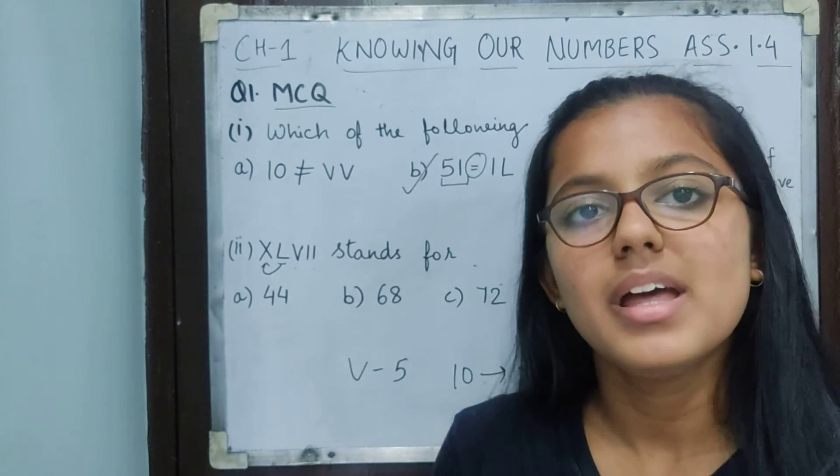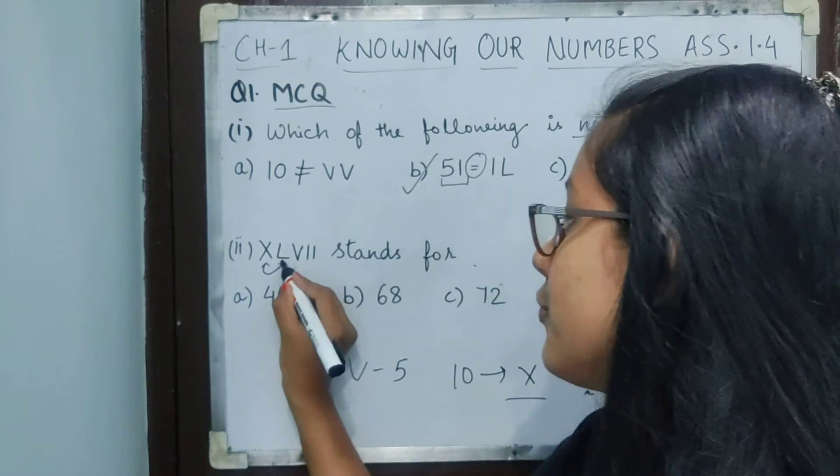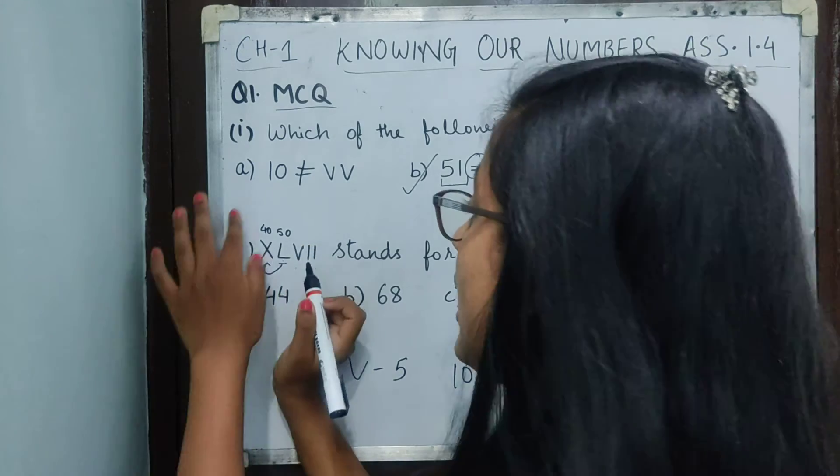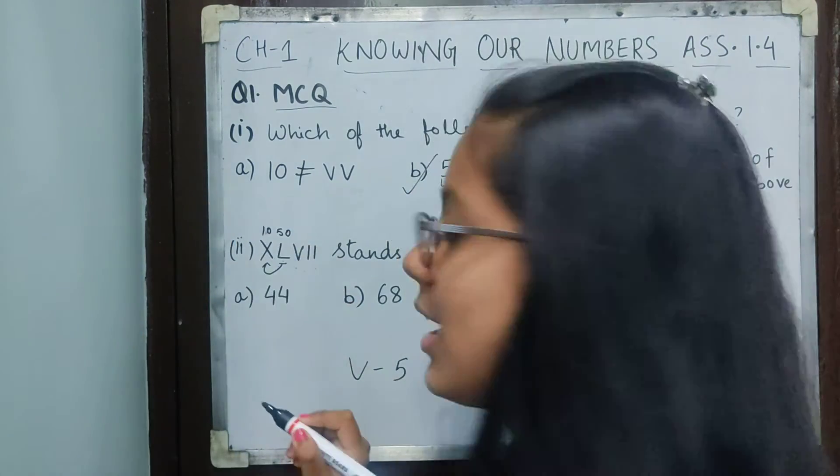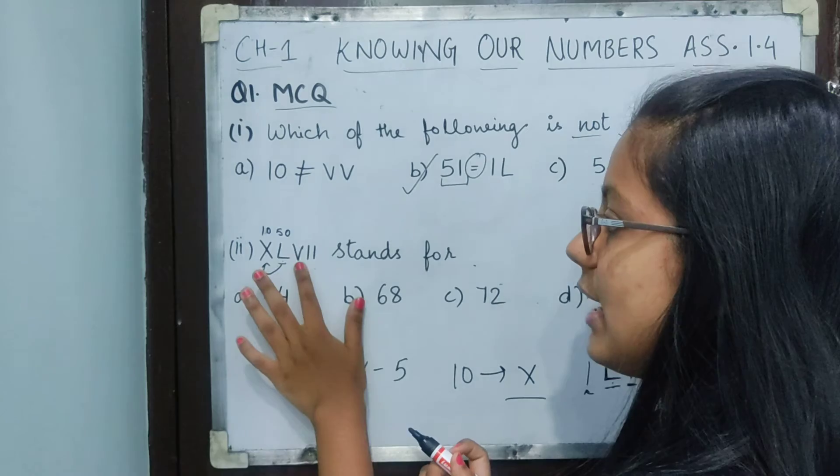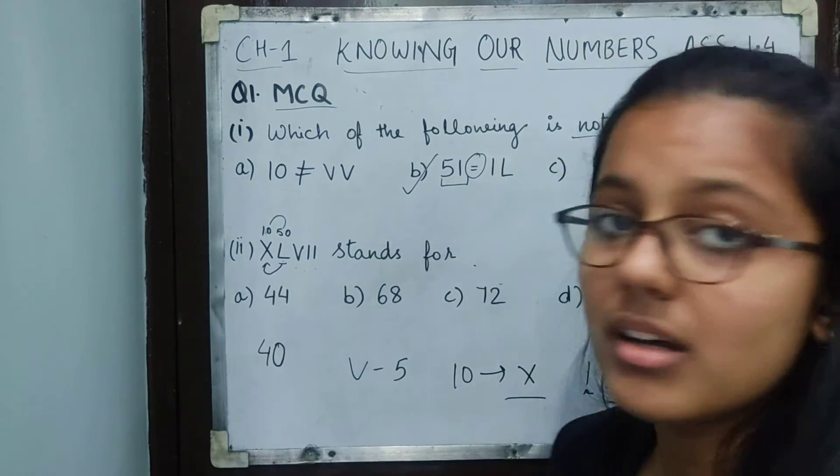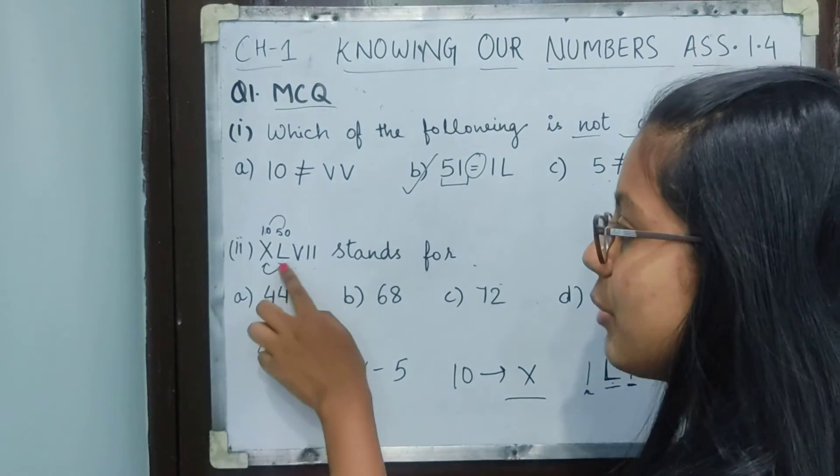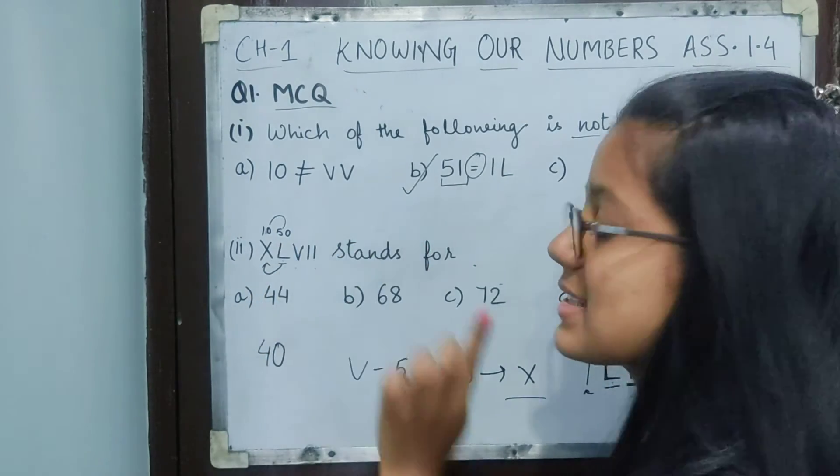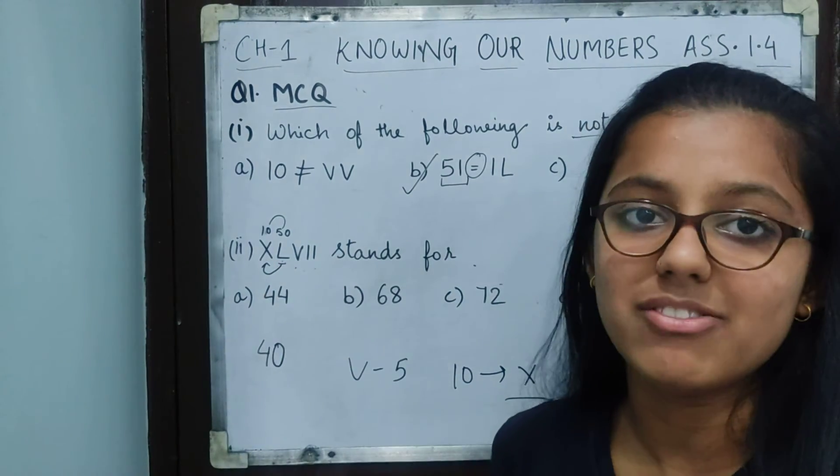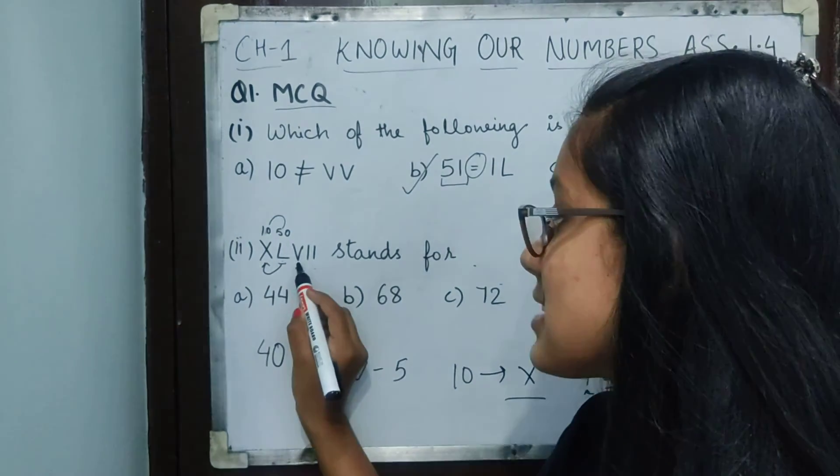On the left side of L is X. I just told you, if any number is placed on the left side, that means subtract. So L was 50 and X is 10. Since it's placed on the left side, 50 minus 10, we get 40. It's not complete yet because on the right side of L is V, that means 5. So 40 plus 5.